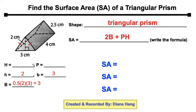Another thing we have to find out is how tall is your triangular base. That would be this length right here, 4. That is the height of your triangular prism.